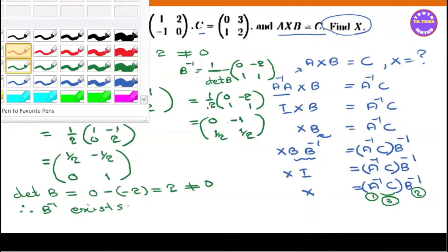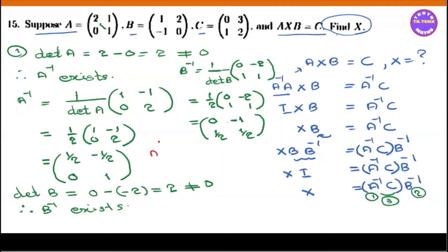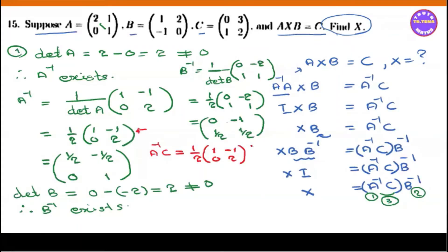This matrix is A inverse C. A inverse C: 1 minus 1, 0, 2 into the matrix 0, 3, 1, 2. That equals 1 over 2 times: first row, first column is 0.